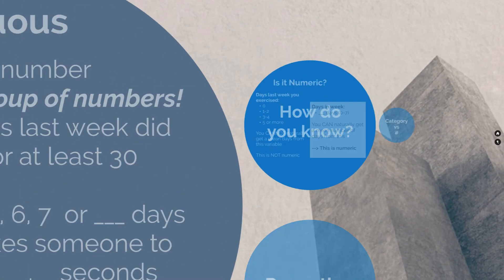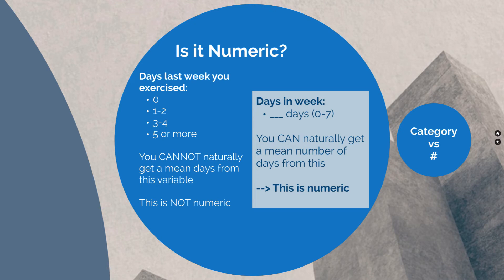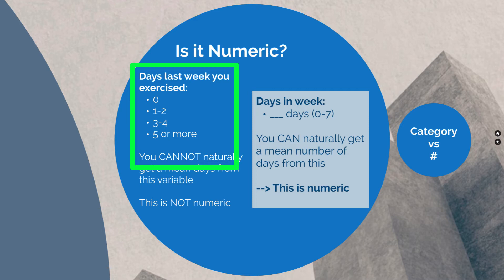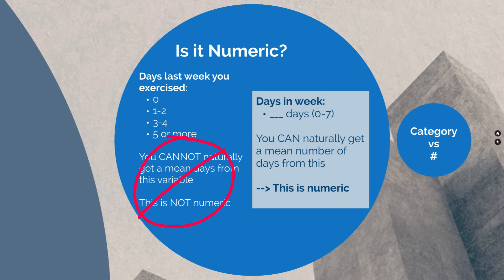The easiest way to tell if you have a numeric or categorical variable is to ask yourself: can I get a mean response from this data? A mean is taking each observation, summing it up, and dividing by the total number of observations — it's the average. If you collected days exercised last week in four categories — zero, one or two days, three or four days, five or more days — this is not numeric. You cannot get a mean value from these answer options. This is ordinal categorical.